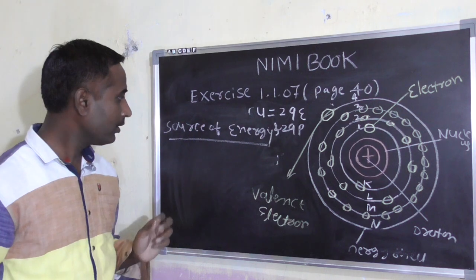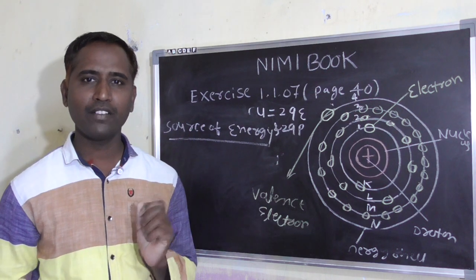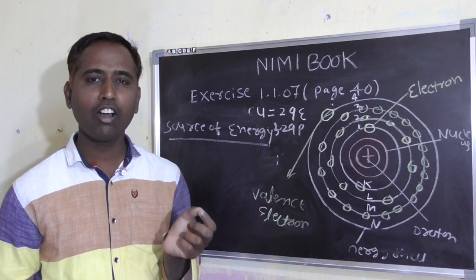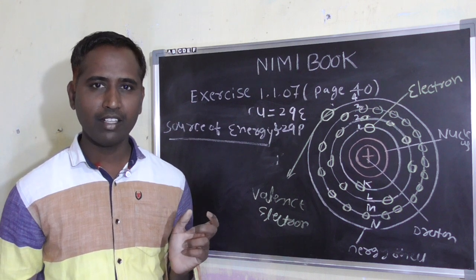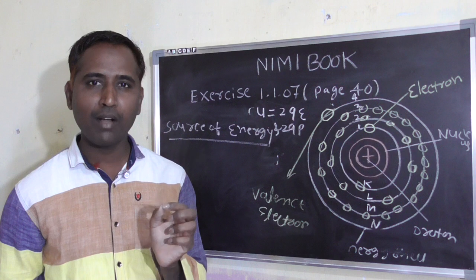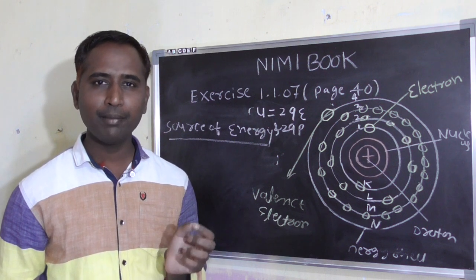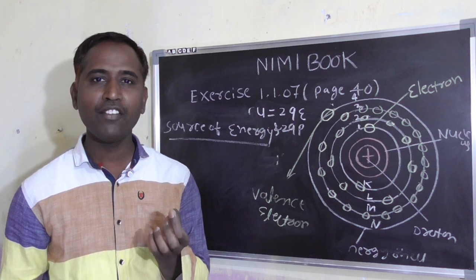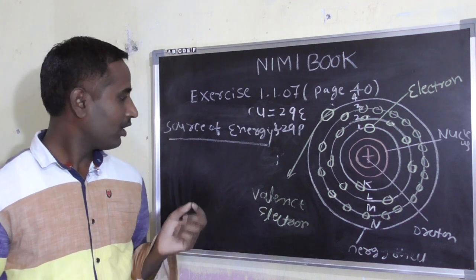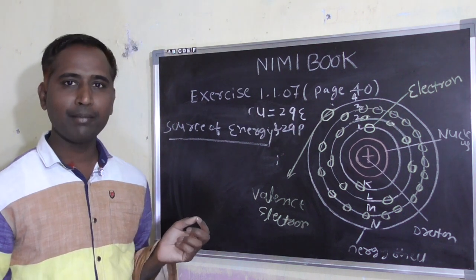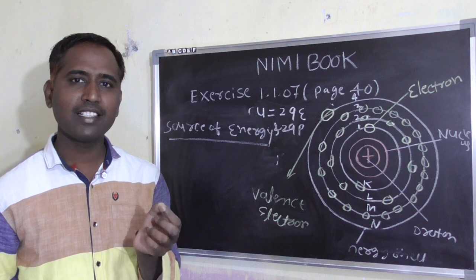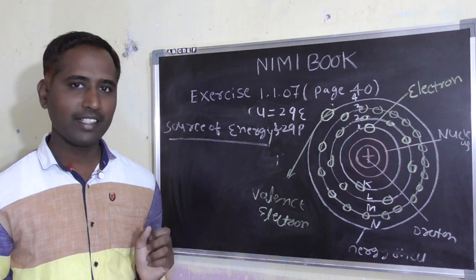So, source of energy — what is source of energy? Energy neither created nor destroyed but it can be converted from one form to another form. Energy means the capacity for doing work. The source of energy means origin — the origin of energy is called source of energy.